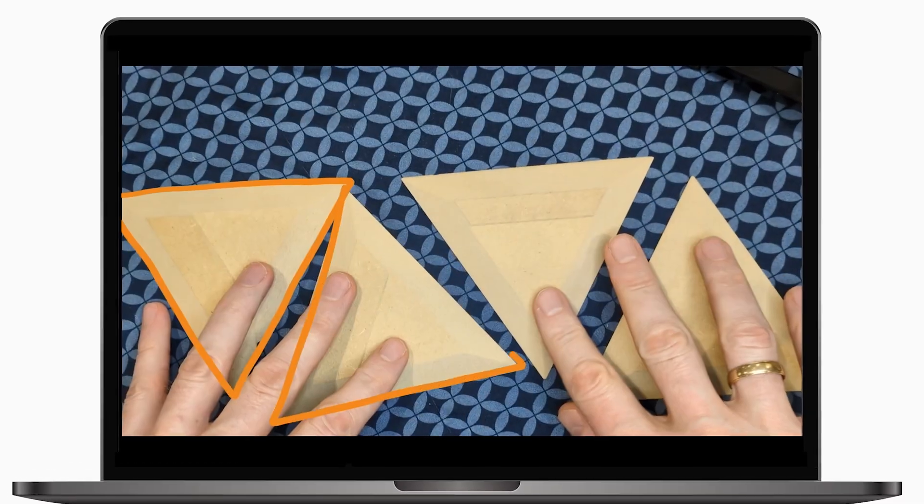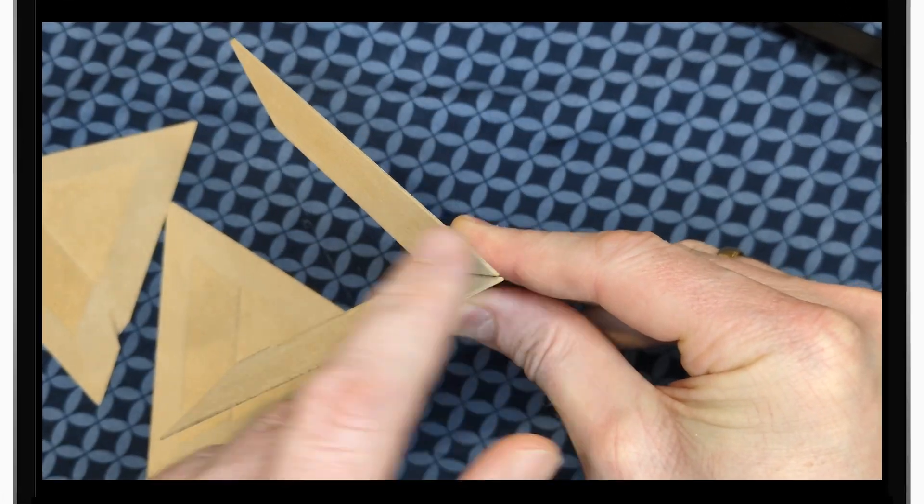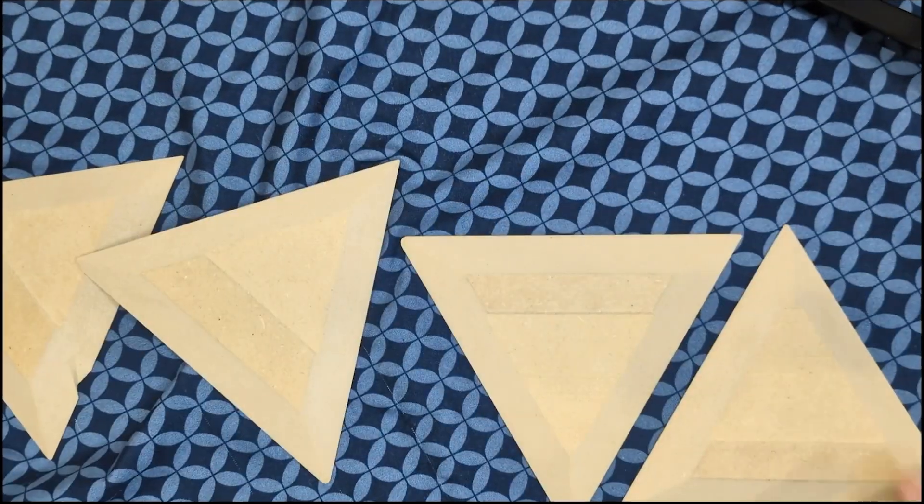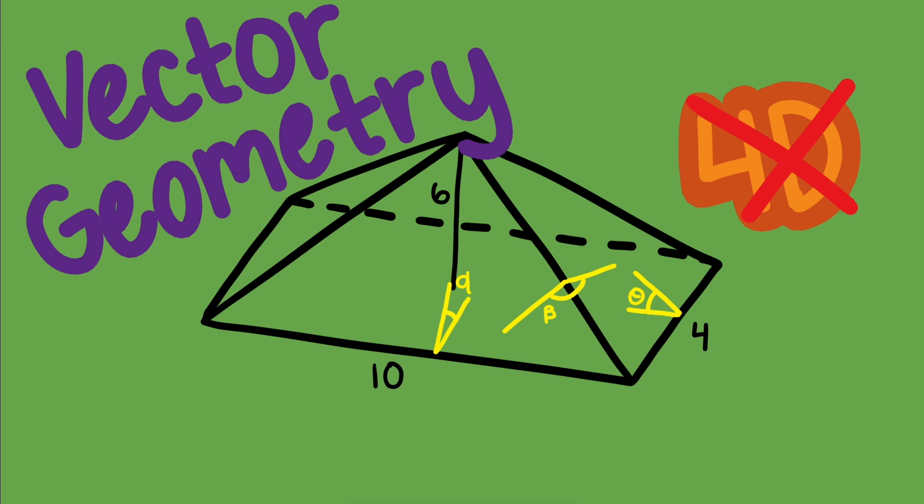In our last video, we used 4D vectors to solve the carpenter's pyramid problem. This time we're taking on a different challenge, one that doesn't require four dimensions but still benefits from the power of vector geometry.